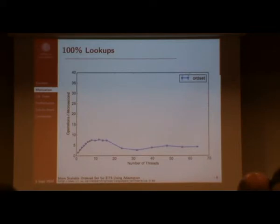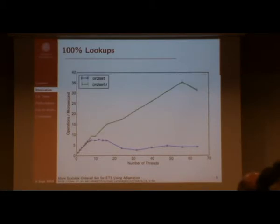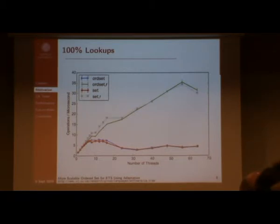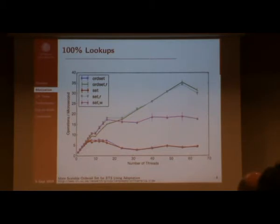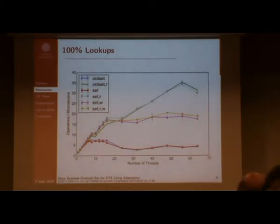In the 100% lookup case, ordered set without any concurrency option doesn't scale well. But when we add read concurrency — the frequent-read-optimized reader-writers lock — it gets much better. Set without read concurrency is still not good, but with read concurrency activated it also improves. Set with write concurrency (fine-grained locking) is not as good as read concurrency only. We haven't figured out yet why it's not better when both read and write concurrency are activated.